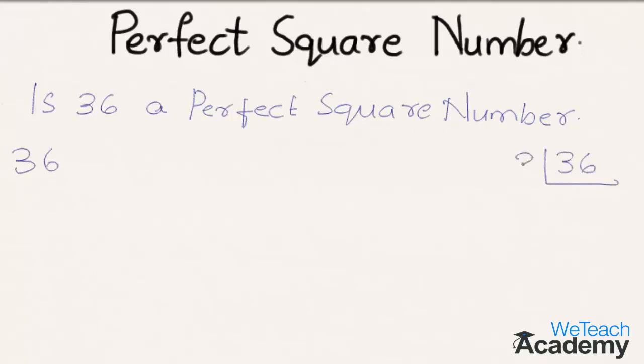So here 36, 2 times 18 is 36, and again 2 times 9 is 18, and here 3 times 3 is 9.